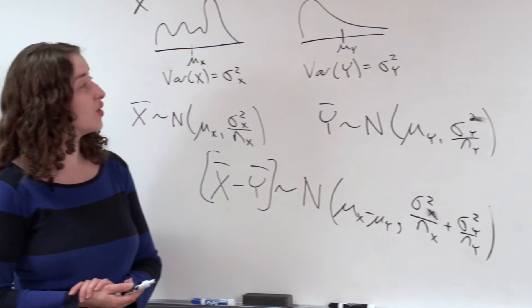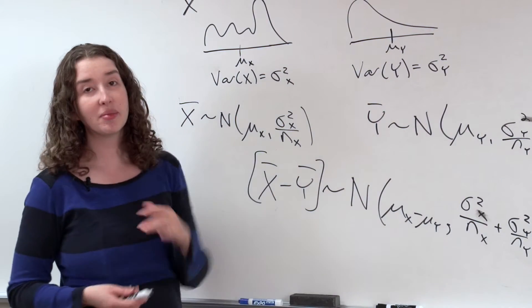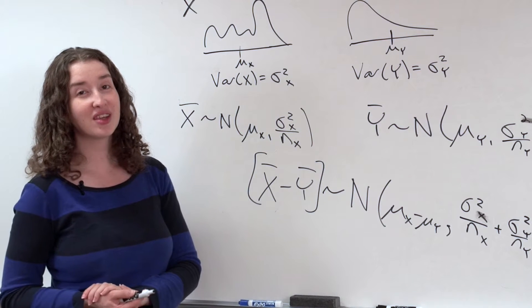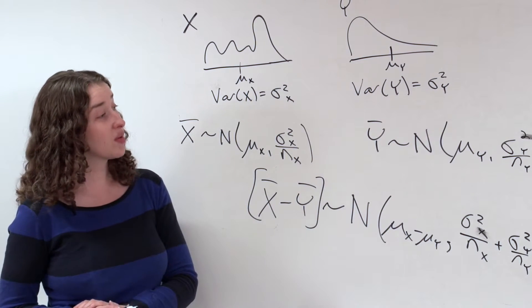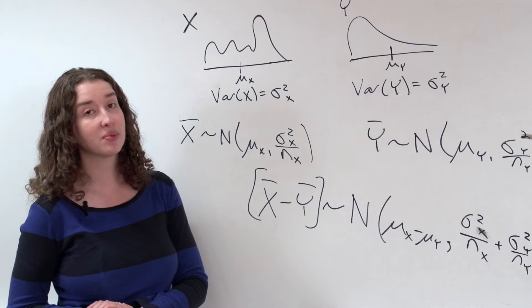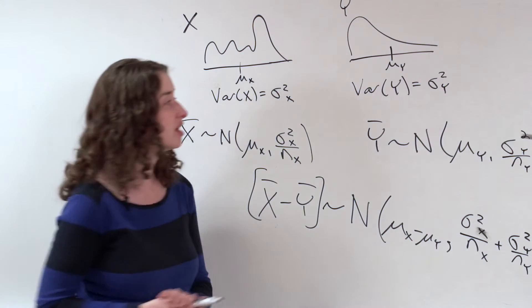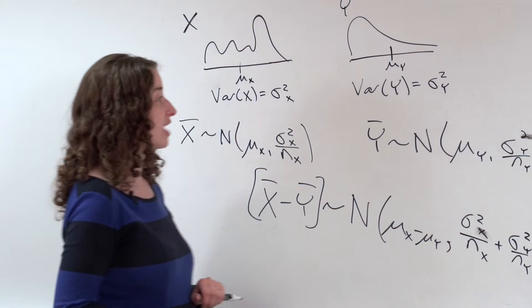Of course, we don't actually know the variances in two populations, typically. Just like we don't know the variance in one population, we don't know the variance in two populations. So really what we want to do is turn this into what's called a two-sample t-test, which is much more common, which accounts for the fact that we don't actually know the variances.